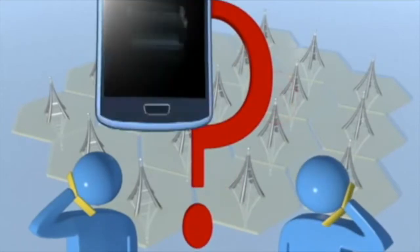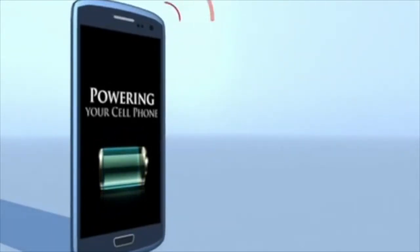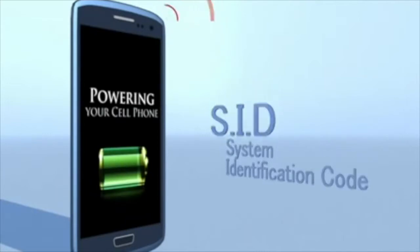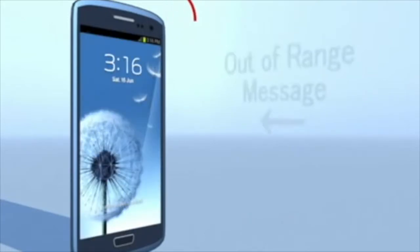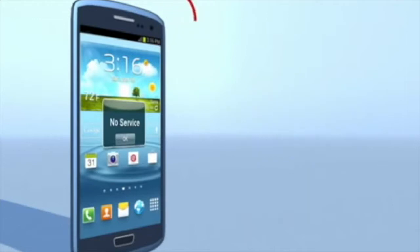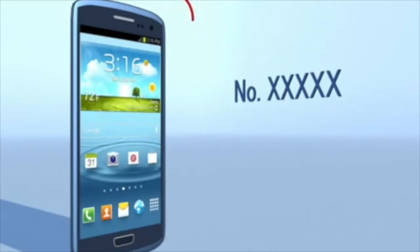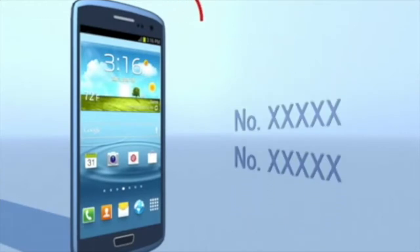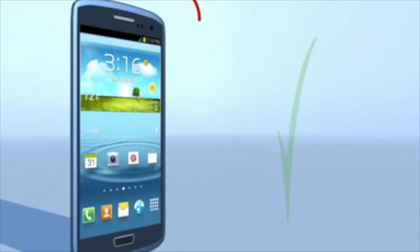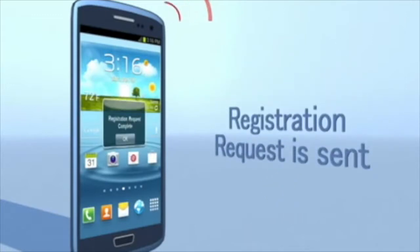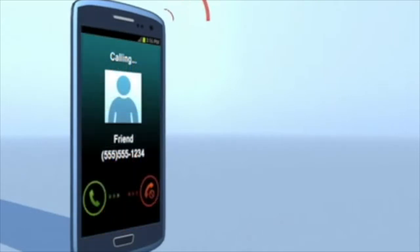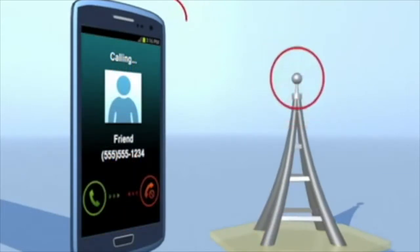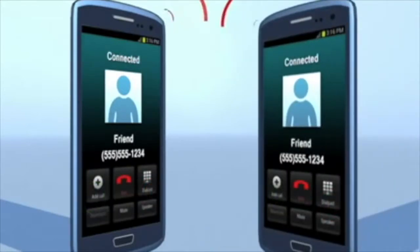So what happens when someone calls you? When you first power up the phone, it listens for an SID on the control channel. The SID is the System Identification Code, a unique five-digit number that is assigned to each carrier by the Federal Communications Commission. If the phone cannot find any control channels to listen to, it knows it is out of range and displays a no-service message. When it receives the SID, the phone compares it to the SID programmed into the phone. If the SIDs match, the phone knows that the cell is communicating with this part of its home system. Along with the SID, the phone also transmits a registration request. The MTSO, also known as the Mobile Telephone Switching Office, keeps track of your phone's location in a database. The MTSO picks a frequency pair that your phone will use in the cell that will take the call. And once your phone and the tower switch on those frequencies, the call is connected. Now you are talking by a two-way radio with a friend.